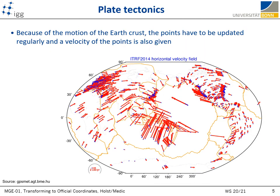Because of the Earth's tectonic plates that continuously move at approximately two centimeters per year, besides knowing the exact 3D coordinates of all measured stations, we also need to estimate the velocity and direction of these points' movement over time. These values are also part of the terrestrial reference frame definition.